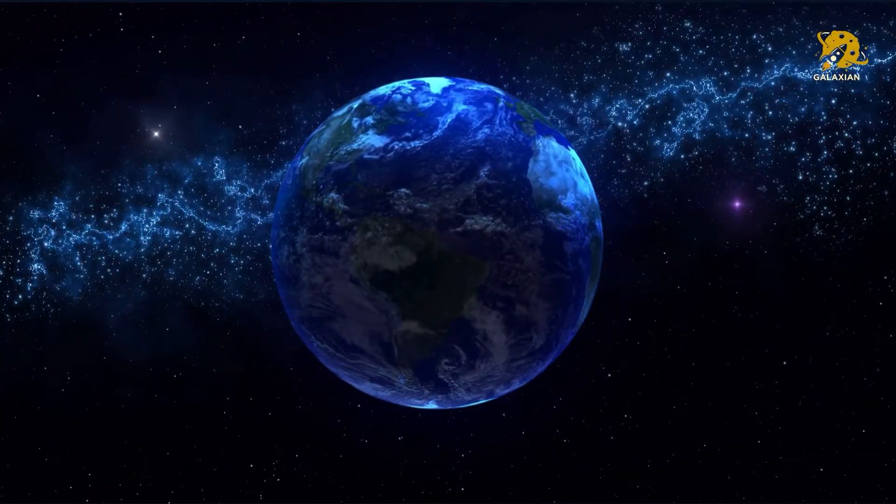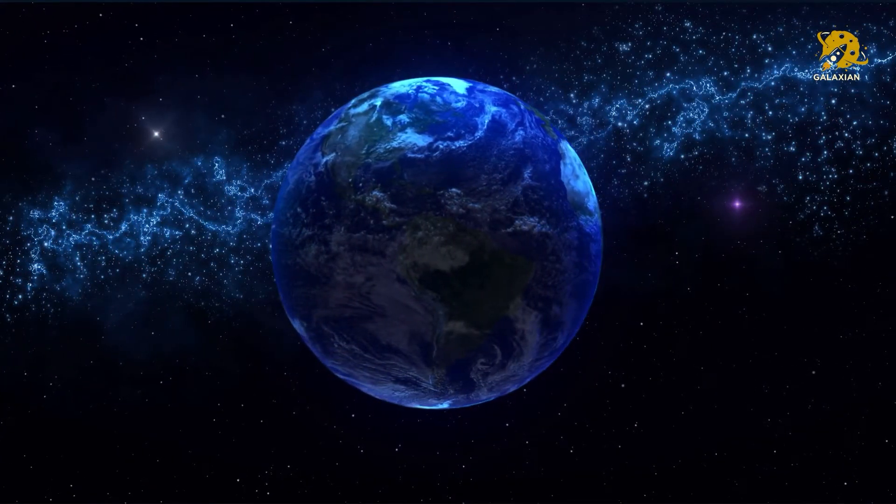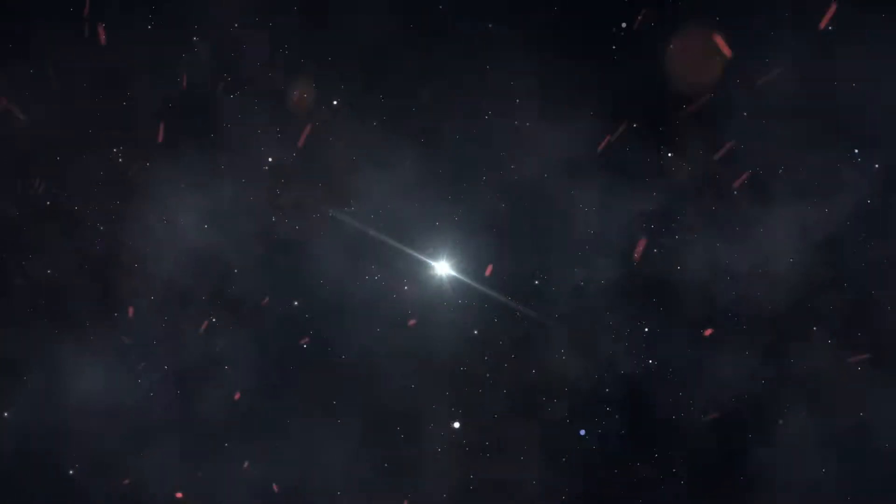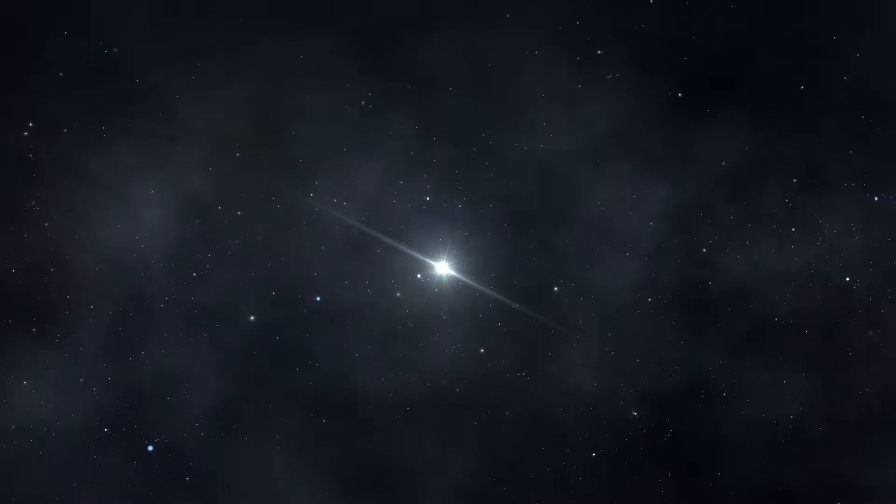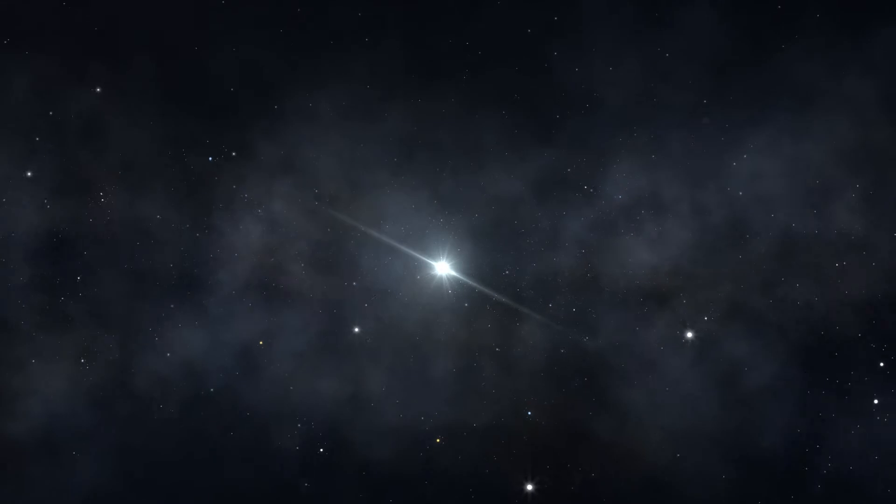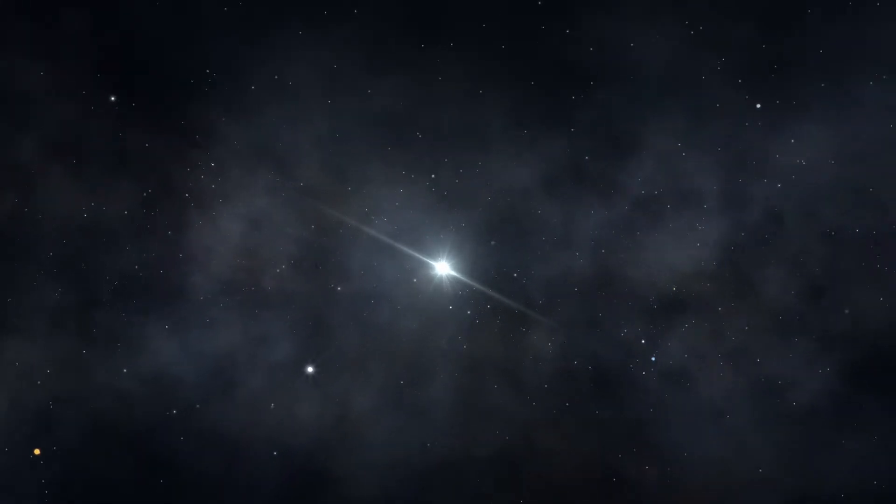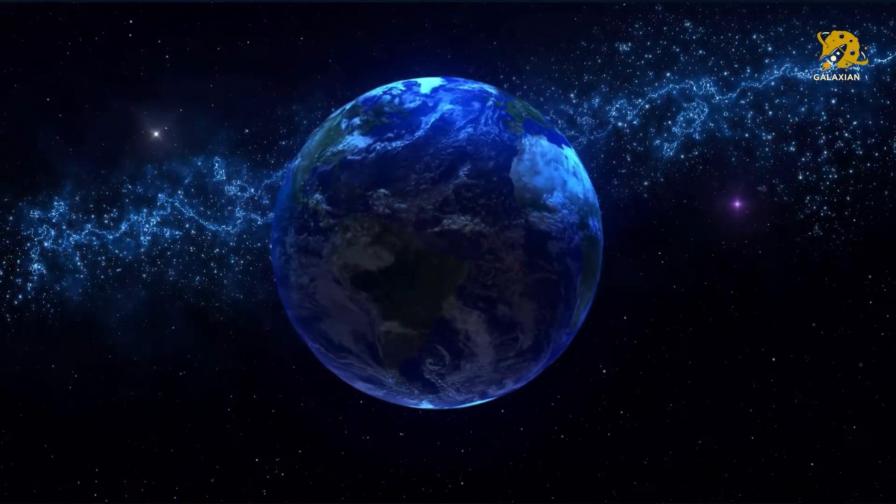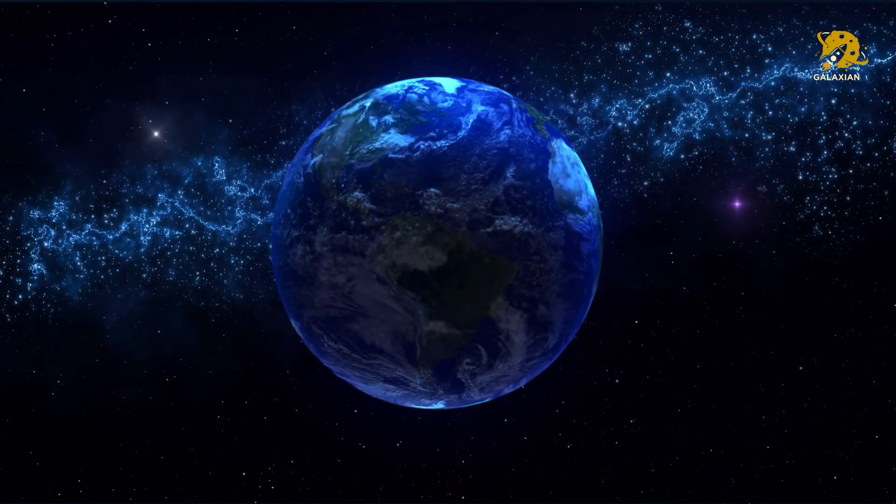This planet orbits a pulsar, or extremely compact and dense neutron star, that is about the size of a large city. This one has a diameter of 12 miles but its mass is 1.4 times the mass of the Sun. Another thing about pulsars is that they rotate quickly, therefore this planet has an orbital period of two hours.